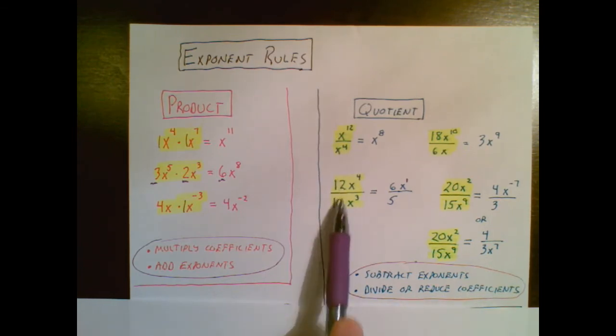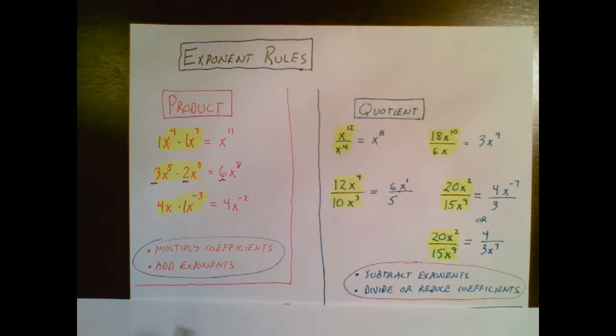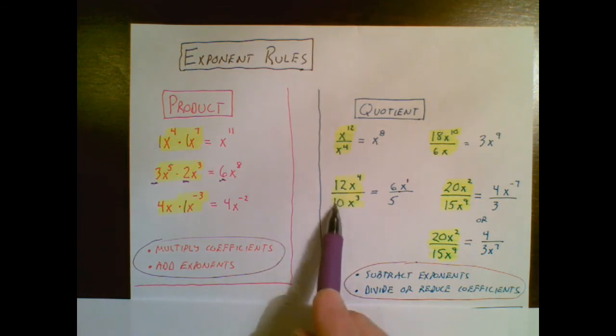Well 12 divided by 10 doesn't work out perfectly but I can reduce it just like a good old fraction back in the day. Two divides into both of those evenly so this becomes a six-fifths.